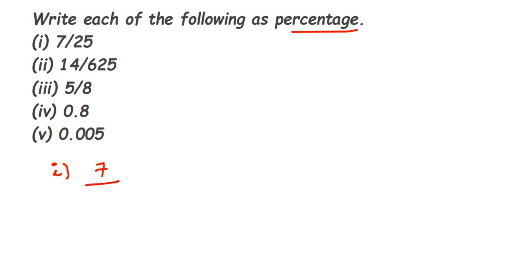We have 7 upon 25 and we have to find out its percentage. As I said, just multiply with 100, then do the cancellation — bring it to the reduced form, the smallest form. I can cancel 25 and 100: 25 fours are 100, so I'm left with 7 and 4 in the numerator. 7 multiplied by 4 is 28, so we get 28%. It's very simple.